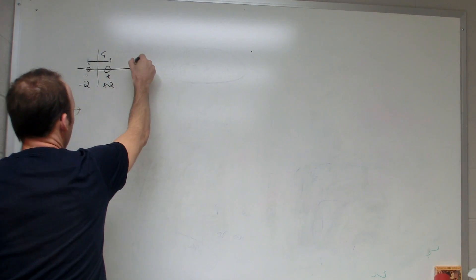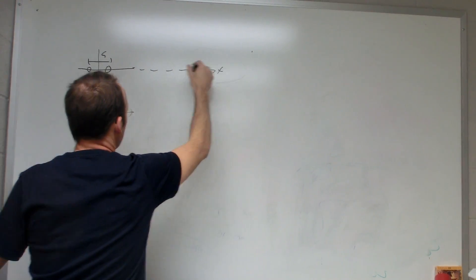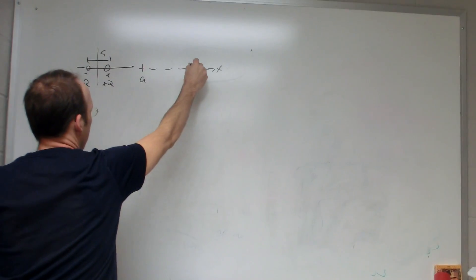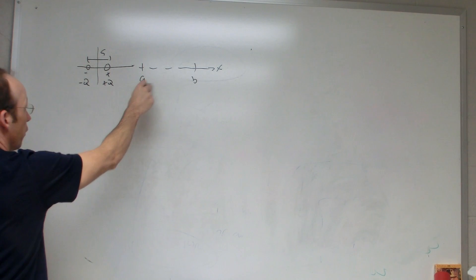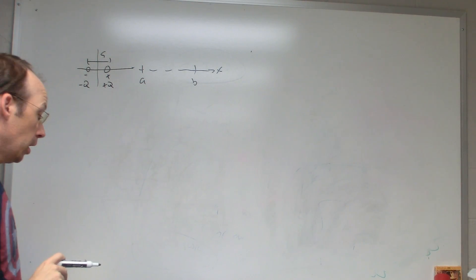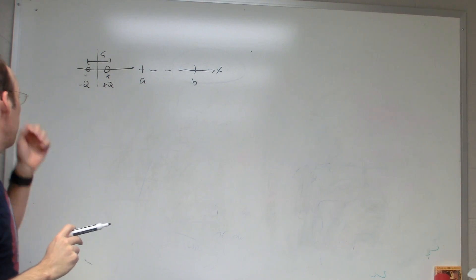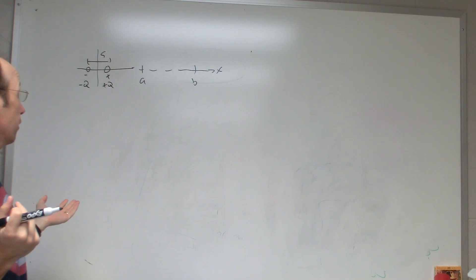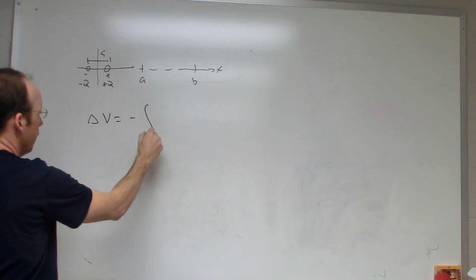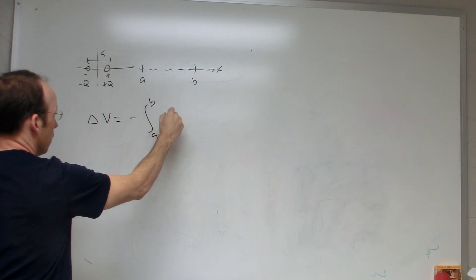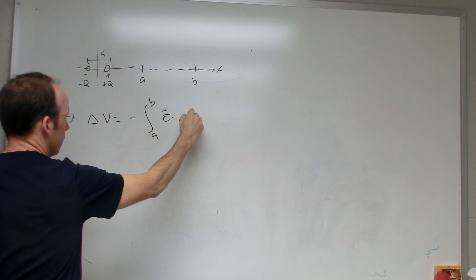And then I want to find, let's call this the x direction, and this is a and b, and I want to find the change in potential going from a to b. Okay, so let's just get to work here. What's the definition of change in potential? Negative the integral from a to b of e dot dl.